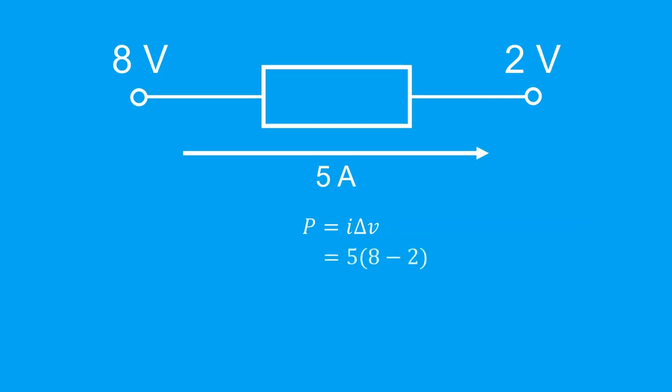So that means we get 5 times 8 minus 2, and this simplifies to give us 30 watts. Remember that this is positive 30 watts. So since it's positive, we consider this as 30 watts of power being dissipated.